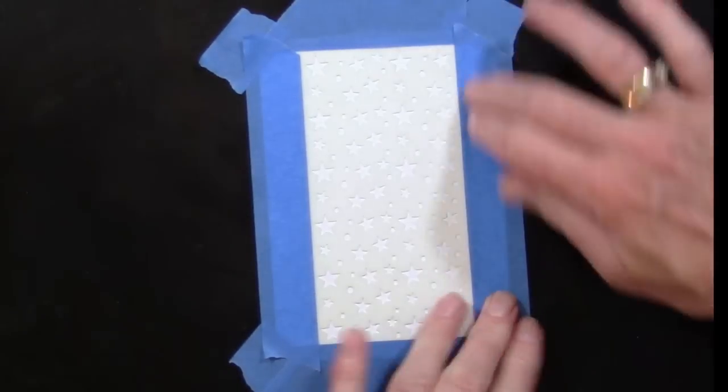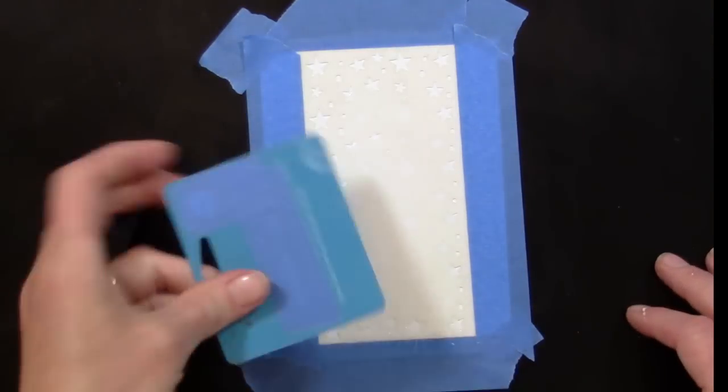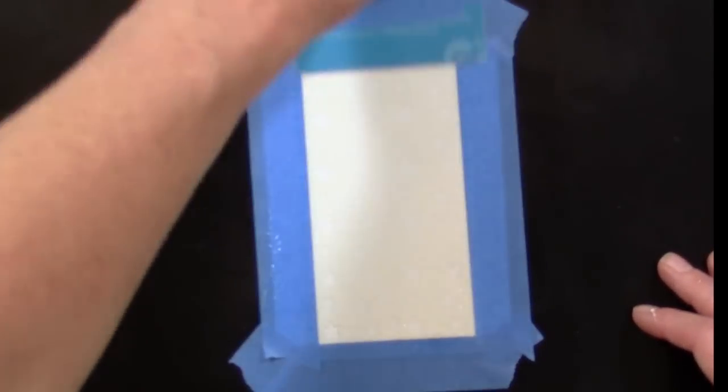Next, apply a very generous amount of deco foil adhesive over the stencil and spread it across the stencil with the back of a credit card or a gift card.